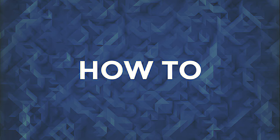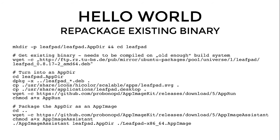How do you make an AppImage? It's really not that complicated. Here I show a little hello world example of repackaging an existing binary — in this case, I take a Debian package of the Leafpad application and convert that into an AppImage. The first thing I do is make a Leafpad application directory, then download the Debian package, go into the AppDir, and unpack the Debian package.